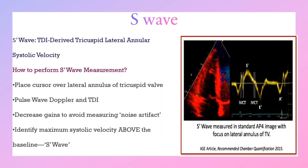Another method to assess RV systolic function is tissue Doppler S wave. Place the cursor over the lateral annulus of the tricuspid valve, then apply pulsed wave Doppler in tissue Doppler mode. Decrease the gain to avoid noise artifacts, and identify the maximum systolic velocity above the baseline, named the S wave. If the S wave is less than 9.5 cm per second, that indicates RV systolic dysfunction.